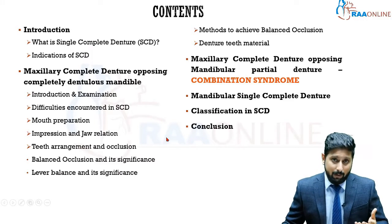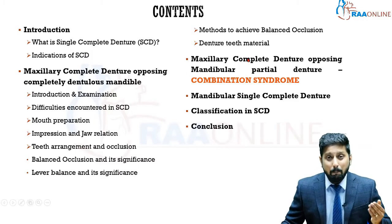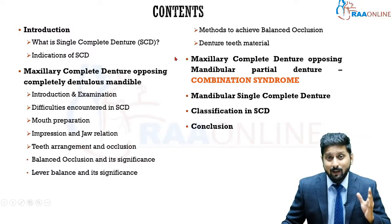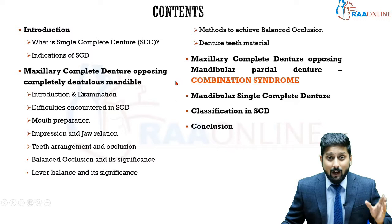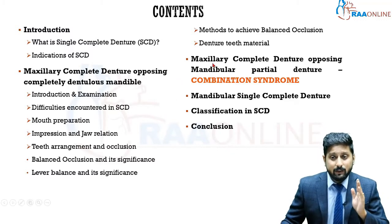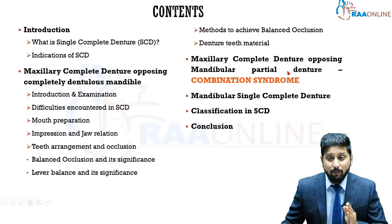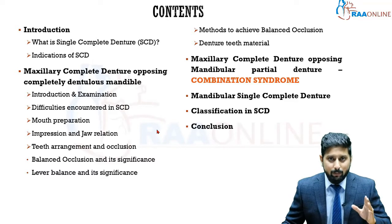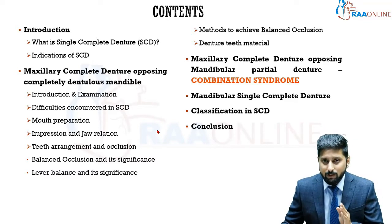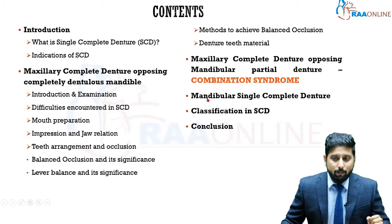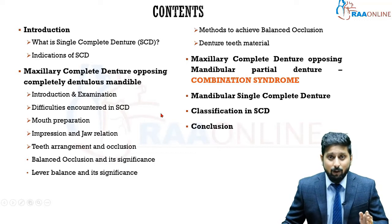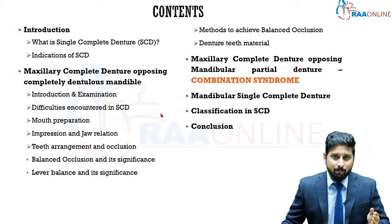We'll discuss methods of achieving balanced occlusion and the various denture teeth materials available. Then we'll look at another important scenario: maxillary complete denture opposing a mandibular partial denture, commonly described as combination syndrome. We'll cover how to deal with that situation, followed by mandibular single complete denture, and finally a classification of patients who receive a single complete denture.